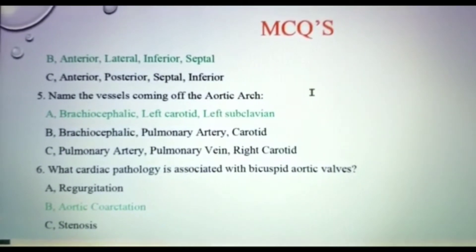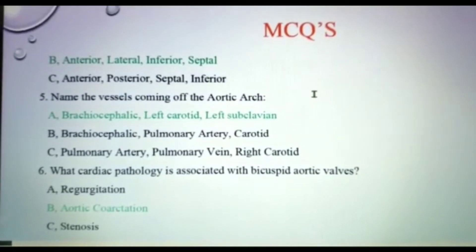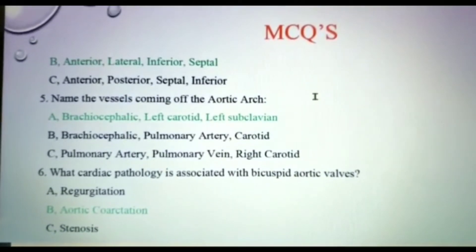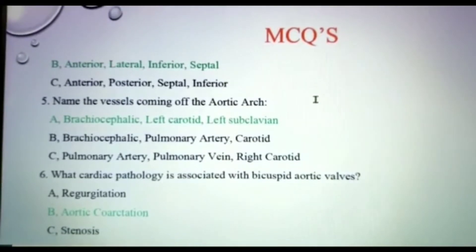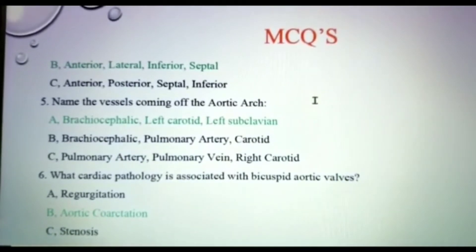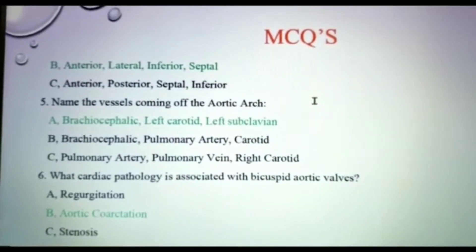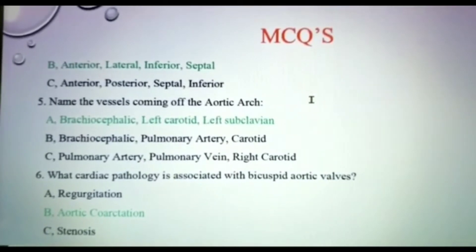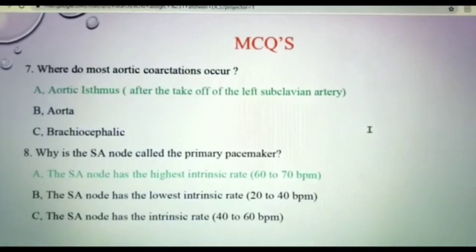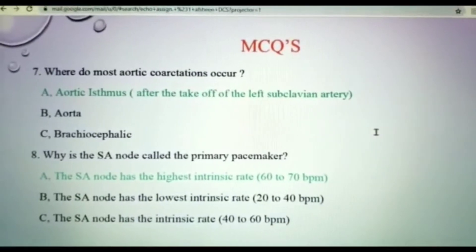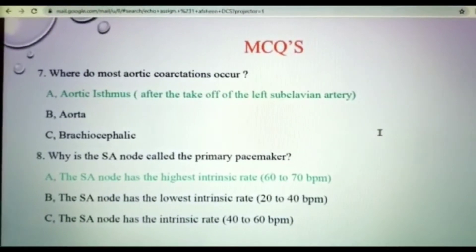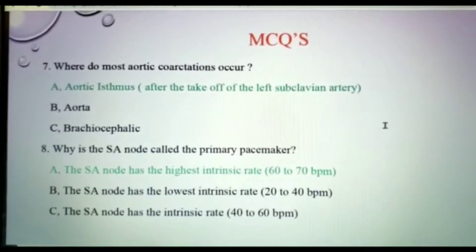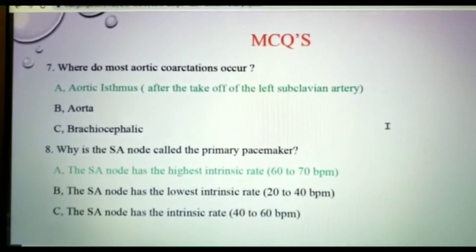Another important question: what cardiac pathology is associated with the bicuspid aortic valve? This is aortic coarctation. Aortic coarctation is the cardiac pathology which is associated with the bicuspid aortic valve.